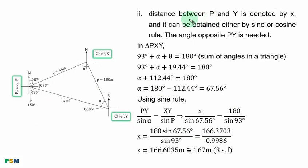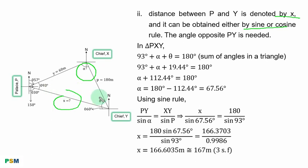Roman numeral 2: we are to find the distance between P and Y, denoted by S. That distance can be obtained using either the sine or cosine rule. In order to use either rule, the third angle alpha is needed. In the triangle, two angles are already known — 93 degrees and theta (19.44 degrees). Adding all three angles must give 180 degrees, so alpha equals 180 minus 93 minus 19.44, which gives 67.56 degrees.